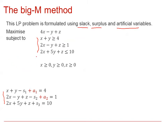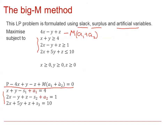In order to do the Big M method, we need to introduce an arbitrarily large number, M. We subtract M multiplied by the total sum of all the artificial variables from the objective function. This means that when we use the Simplex method to solve this modified objective function, we will not only be maximising the original function p, but also simultaneously minimising the sum of the artificial variables, driving them to zero. So our objective function becomes this form, which we can use in the Simplex algorithm.